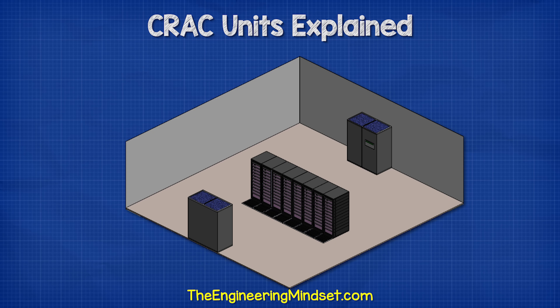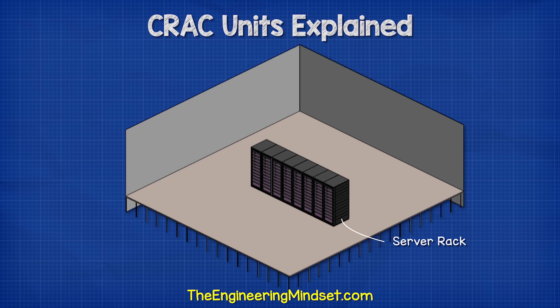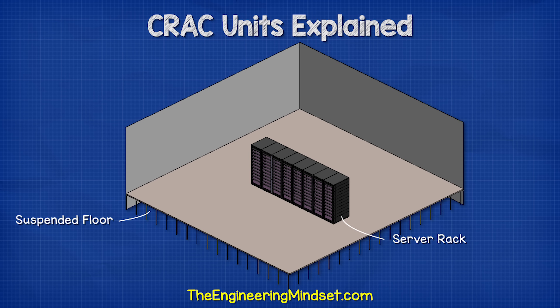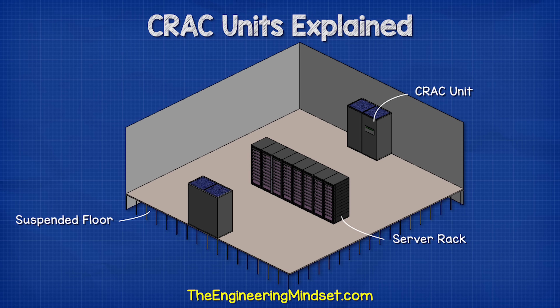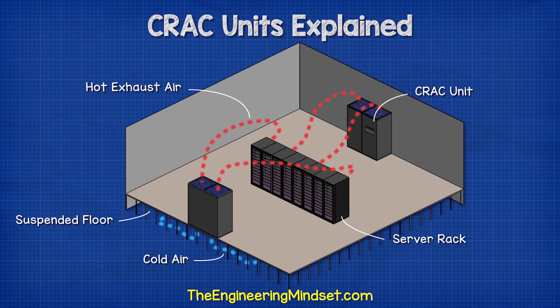In a typical simple data center, server racks are installed within the room on a suspended floor. Around the perimeter of the room we find CRAC units, which stands for computer room air conditioners. These CRAC units suck in the hot exhaust air from the servers at the top, then cool this air down and push it into the void under the floor.